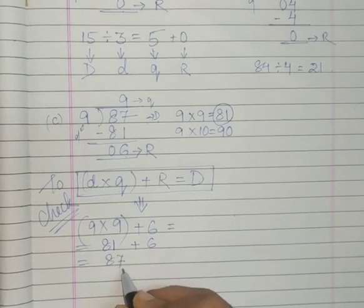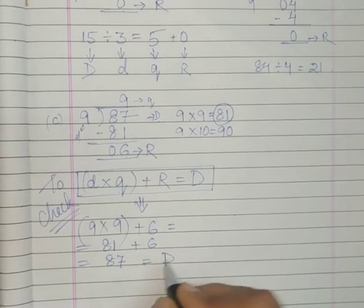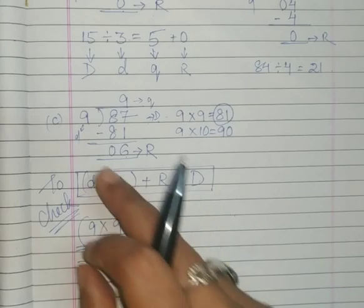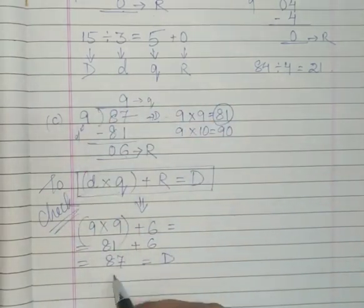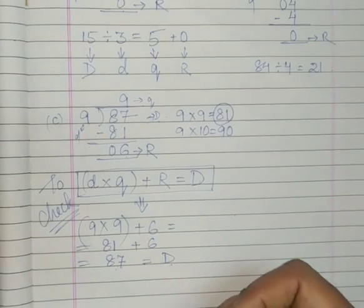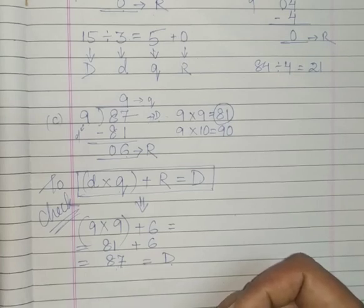Now you see, this is capital D, equal to capital D. So our division process is correct. We have checked it. This is the way you have to do two-digit numbers divided by one-digit numbers.